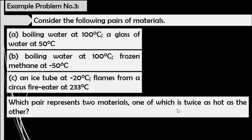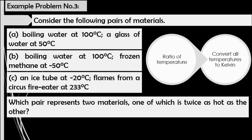This problem involves ratio of temperatures, and for this case, the ratio that we must have is 1 to 2. If we encounter a problem that involves ratio of temperatures, we must convert all temperatures to the Kelvin scale.